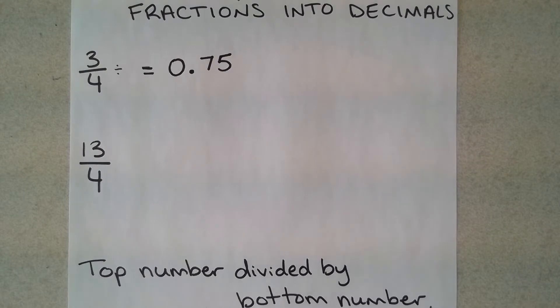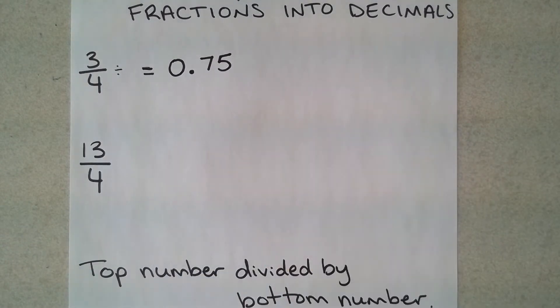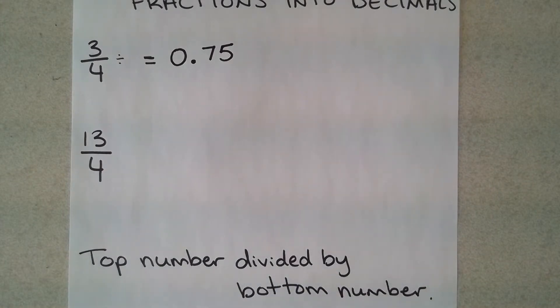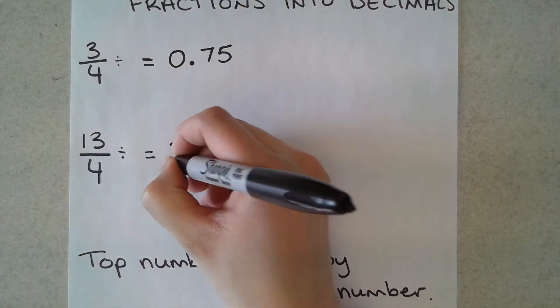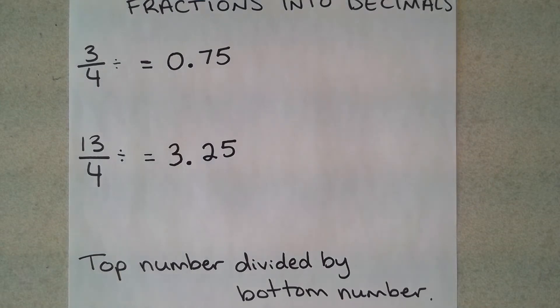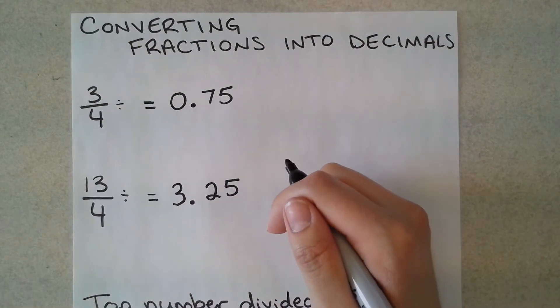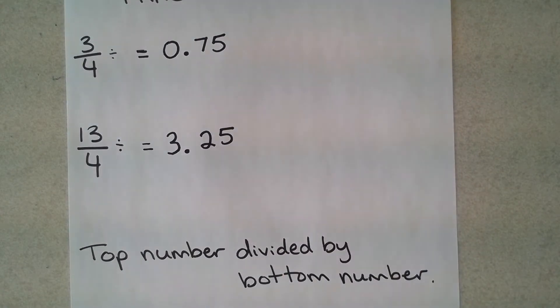Let's try one more quick example just so you see it's the same process every time. For 13 over 4, you're going to follow top number divided by bottom number. In your calculator you're going to put 13 divided by 4, and you're going to get 3.25. That's it, that's your answer. On your worksheet just make sure to read it carefully, find the questions that say converting fractions into decimals, and all you have to do is divide.